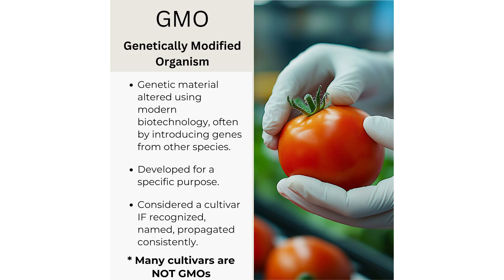GMOs, or genetically modified organisms, are a hotly debated topic. A GMO is a plant that has had its genetic material altered using modern biotechnology, often by introducing genes from other species. A GMO plant developed for a specific purpose such as disease resistance or herbicide tolerance can be considered a cultivar if it is recognized, named, and propagated consistently. However, many cultivars are not GMOs — they are the result of traditional breeding methods without genetic engineering.